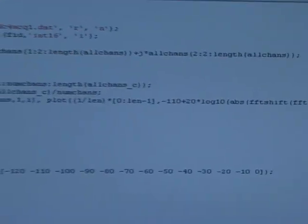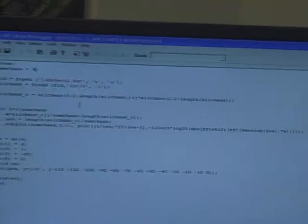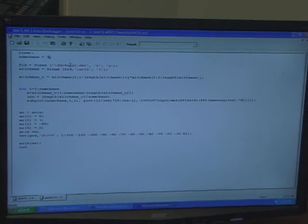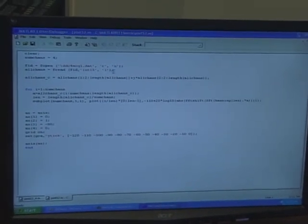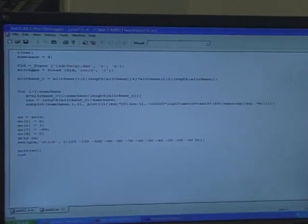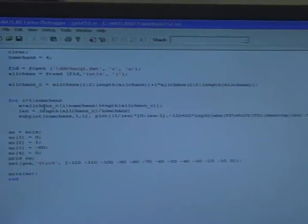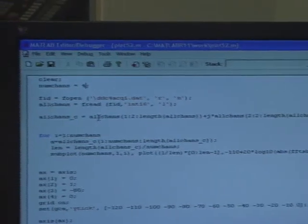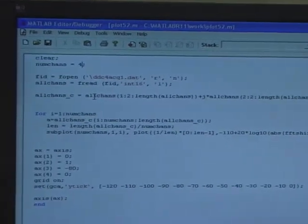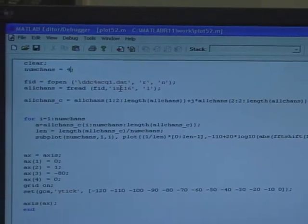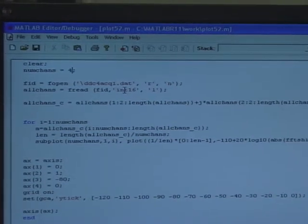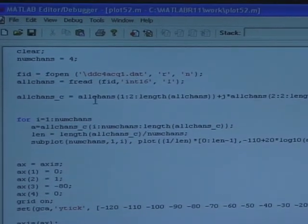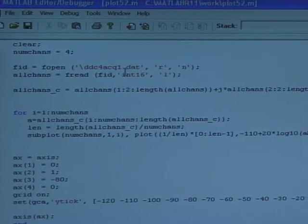Now, I have written a MATLAB script. It's a very simple MATLAB script. It opens the file. It reads all of the data as 16-bit integers into an array called all channels. And then, because the data is interleaved in the file in both channel and IQ sequence, I have to demultiplex the data.